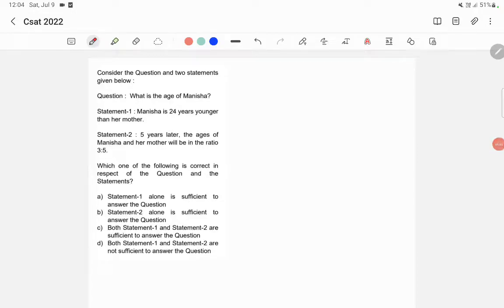Consider the question and two statements given below. Question: What is the age of Manisha? Statement 1: Manisha is 24 years younger than her mother. Statement 2: 5 years later, the ages of Manisha and her mother will be in the ratio 3 to 5.